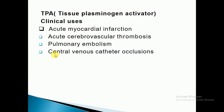TPA (tissue plasminogen activator) is another thrombolytic agent used in the treatment of myocardial infarction — specifically acute myocardial infarction where there is death of myocardial muscle and decreased blood supply. It is also used in acute cerebrovascular thrombosis and pulmonary embolism, as these plasminogen activators enhance and increase blood supply. They are also used for central venous catheter occlusions, i.e., blockages in catheters.